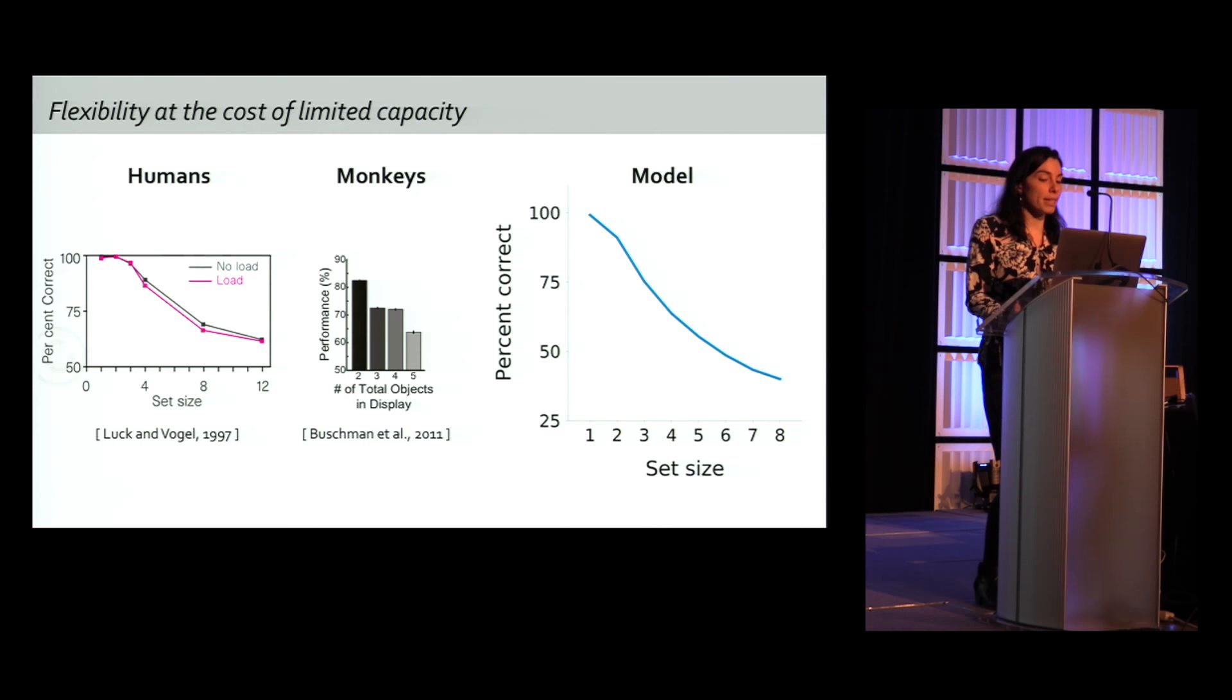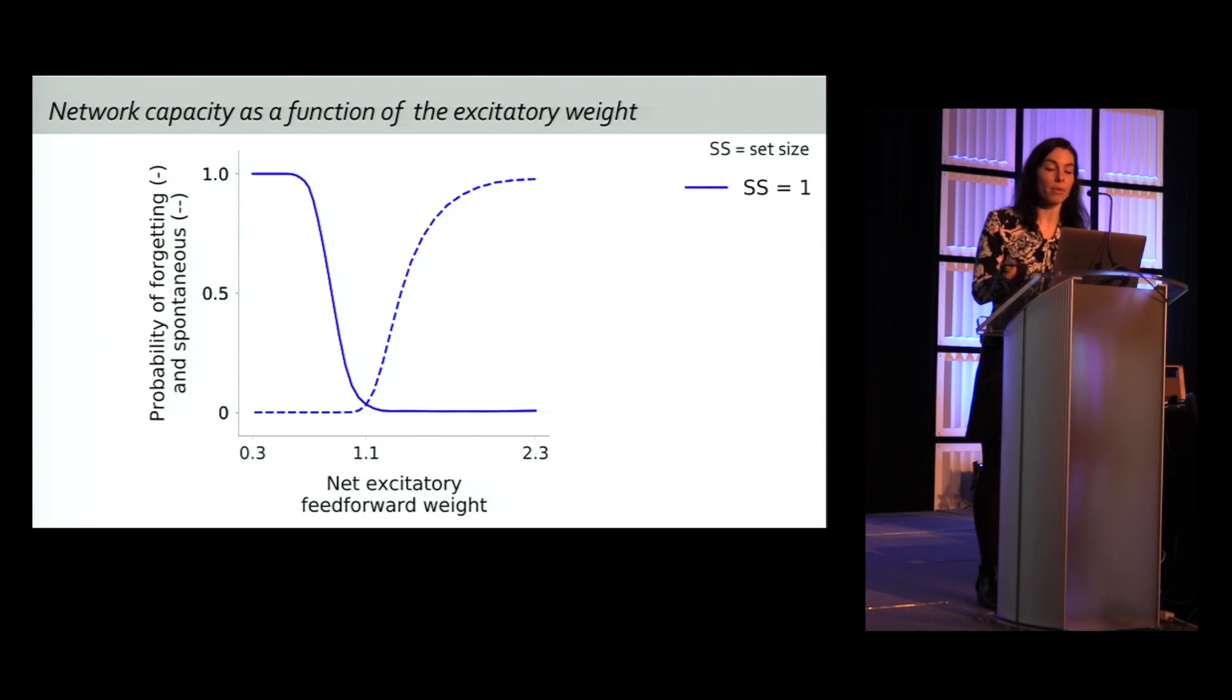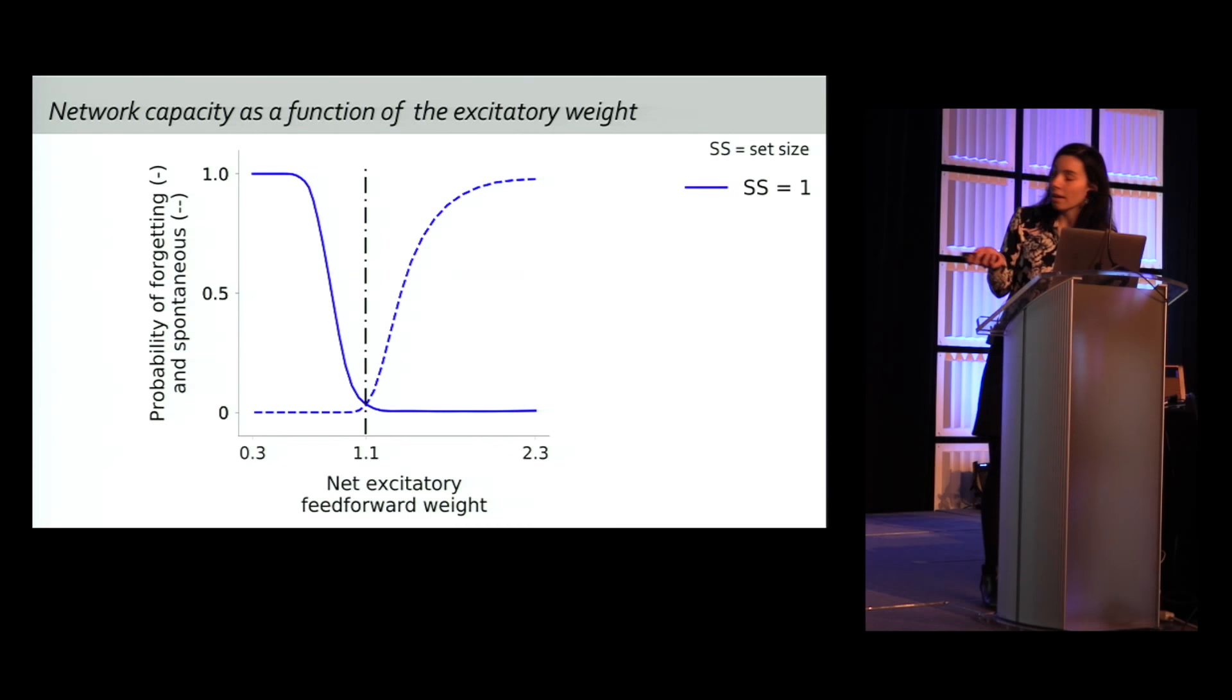Within the bound of the symmetric and random connectivity implemented in this network, the limited capacity is a necessary tradeoff for working memory flexibility. Because we impose equal excitatory and inhibitory drives to all neurons, what matters is the net value of the excitatory weight. So here we display the probability of forgetting an input when only one input is presented in one sensory network. When the net excitatory weight is low, the memory is forgotten. When it's high, the memory is maintained. But when it's too high, the network is creating spontaneous memories in the other sensory networks that did not get an input due to an excessive top-down drive from the random network. So we choose the network to lie exactly here on this black dotted line so that the network maintains any input without hallucinating, more or less.